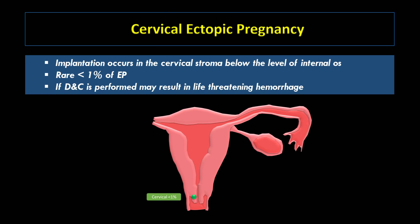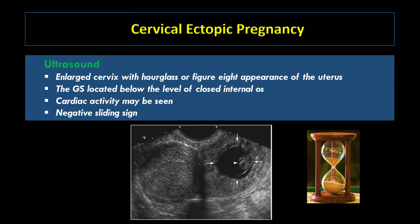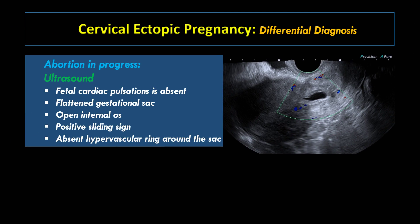Let's discuss cervical ectopic pregnancy. Implantation occurs in the cervical stroma below the level of the internal OS. This is a rare entity accounting for less than 1% of all ectopic pregnancies. If DNC is performed, this may result in life-threatening hemorrhage. On ultrasound, the cervix is enlarged with an hourglass or figure-8 appearance of the uterus. The gestational sac is located below the level of the closed internal cervical OS, and fetal cardiac activity may be seen. There is a negative sliding sign, which helps differentiate cervical ectopic pregnancy from abortion in progress. In abortion in progress, fetal cardiac pulsations are absent, the gestational sac is flattened, the internal cervical OS is open, and gentle pressure produces a positive sliding sign of the gestational sac with absence of a hypervascular ring around it.